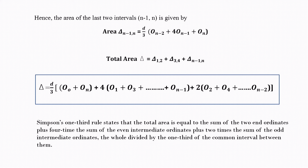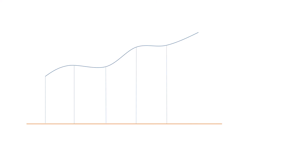Simpson's one-third rule can only be applied when the number of coordinates of the particular boundary line is an odd number. When there is an even number of coordinates, we consider only the area up to the odd coordinates using Simpson's rule, and the remaining pending area has to be determined by another means.